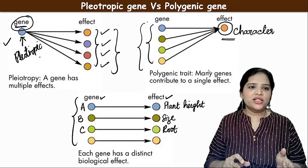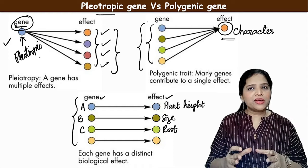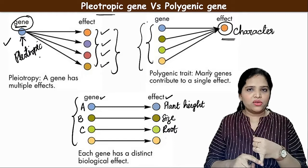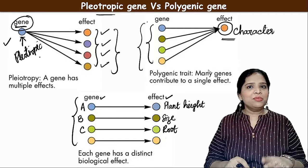Pleiotropic genes are present in all organisms. Mendel observed that characters were inherited simultaneously because of pleiotropic genes. Similarly, pleiotropic genes are also found in Drosophila, plants, and animals. We also need to understand another concept called the additive pleiotropic effect.